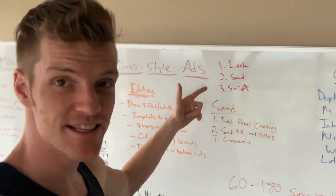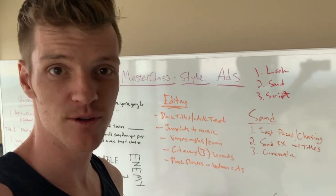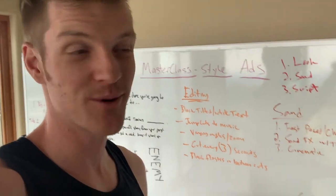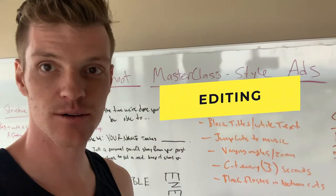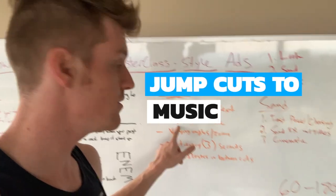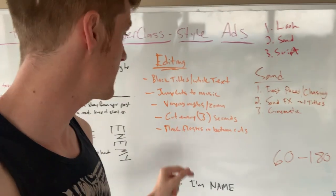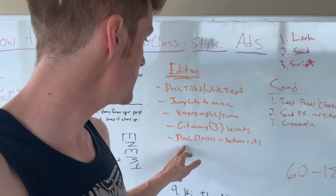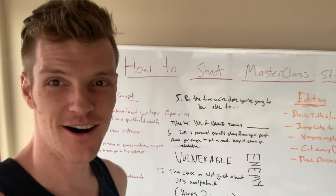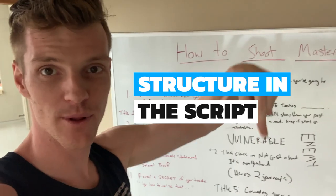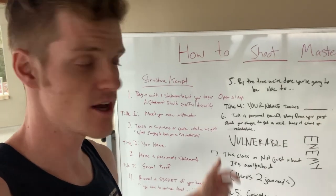We've got the look and the sound — now we need the script. Before we get there, let's look at editing. These ads are shot as a talking head but edited with black-and-white titles — white text on a black background. We use jump cuts to music, meaning the shot changes to the beat. We vary angles and zoom, changing the shot about every three seconds, and can use black flashes between cuts. Grab the script template linked below the video.